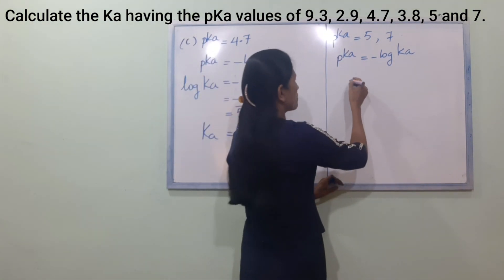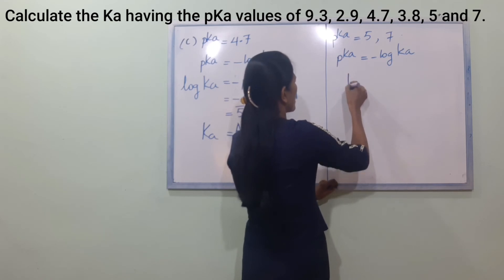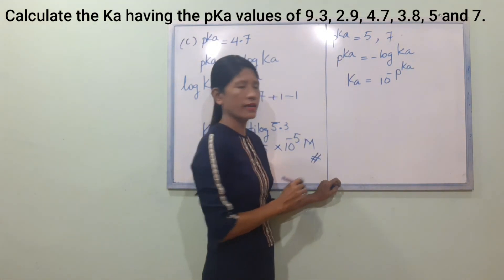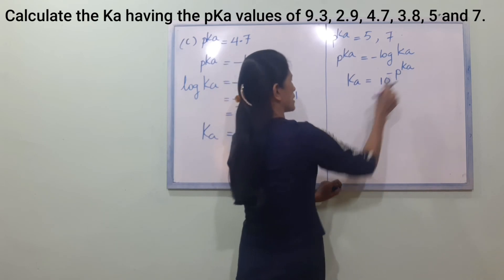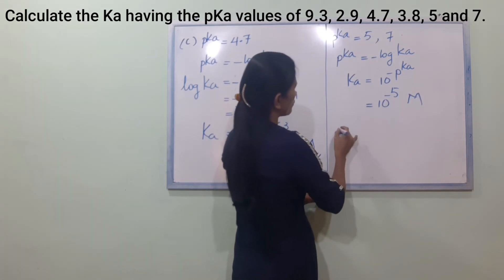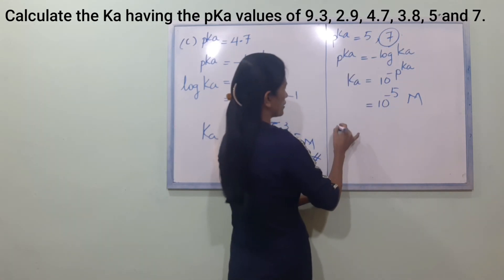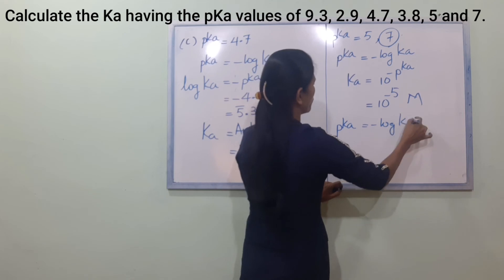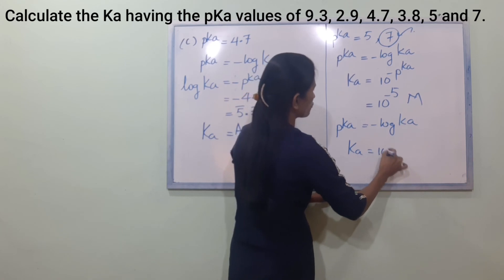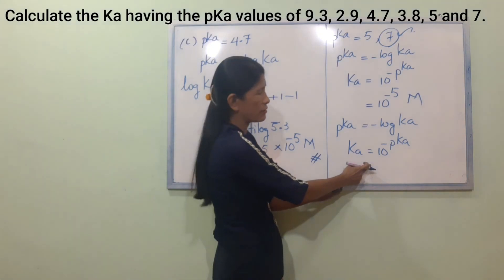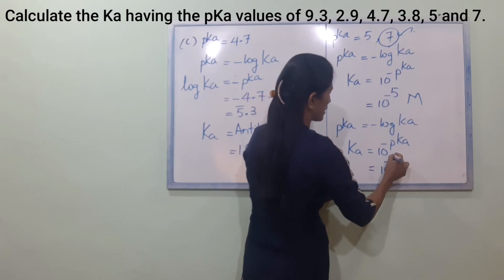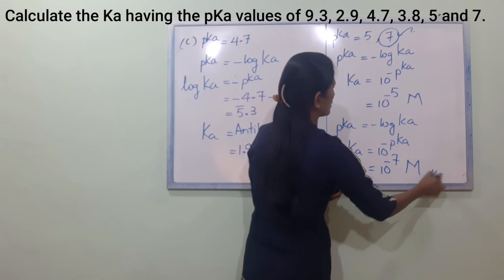Ka is equal to 10 to the power minus PKA. So Ka is equal to 10 to the power minus PKA. The Ka equal to 10 to the power minus PKA.